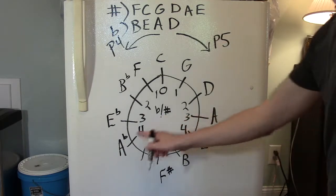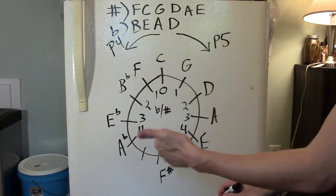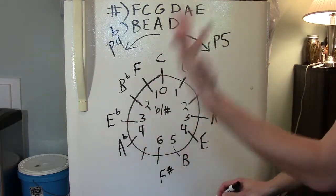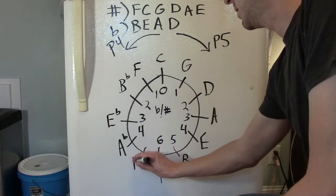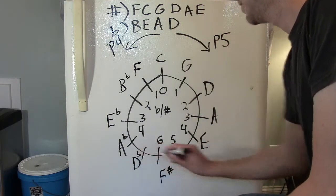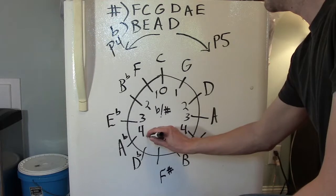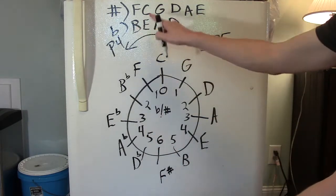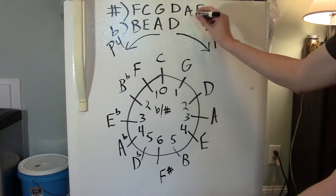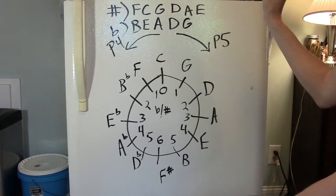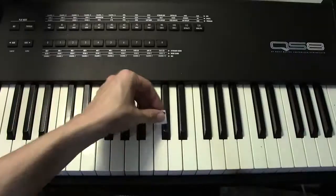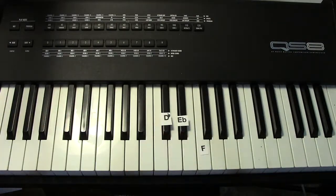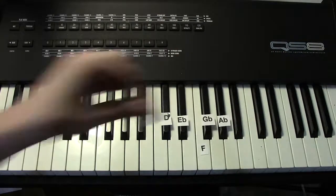So what is a perfect fourth above A flat? Did you guess right? D flat major has five flats in it. They are B flat, E flat, A flat, D flat, and G flat. D flat, E flat, G flat, A flat, B flat.